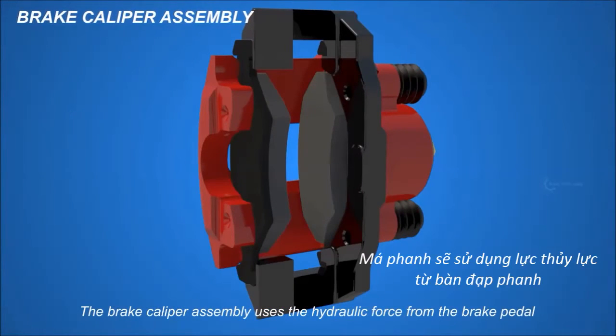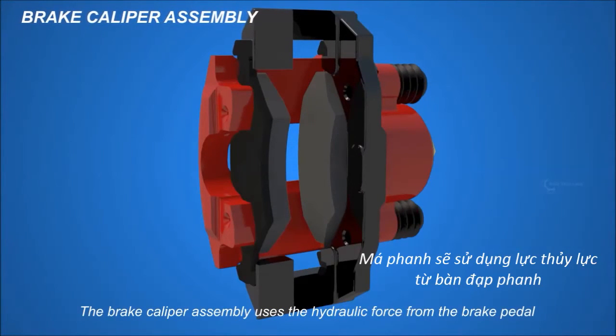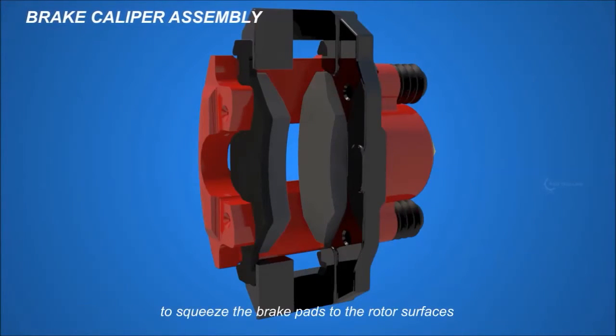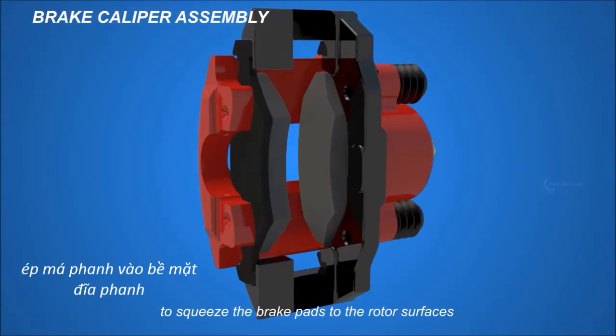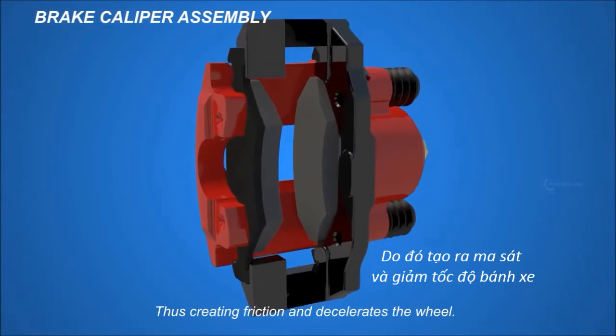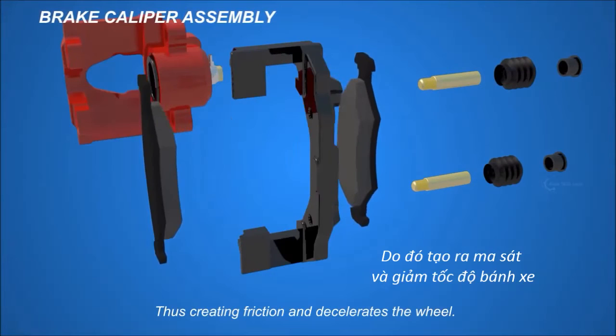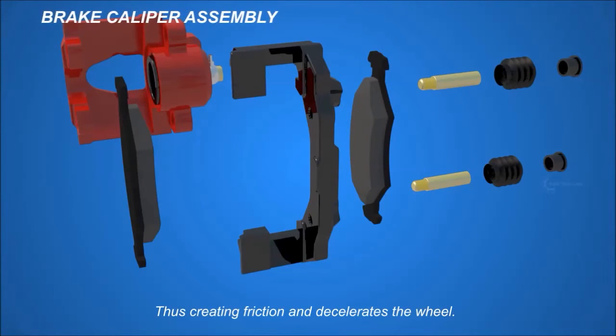The brake caliper assembly uses the hydraulic force from the brake pedal to squeeze the brake pads to the rotor surfaces, thus creating friction and decelerating the wheel.